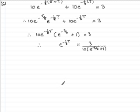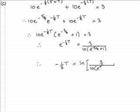So, what I'm going to do now is take natural logs to both sides. And if I take the natural log of e to the minus 1 eighth t, that's just going to give me minus 1 eighth t. And take the natural log of the other side, natural log, and I'll put a square bracket here, of 3 all over 10 bracket e to the minus 5 eighths plus 1. And square off that bracket.